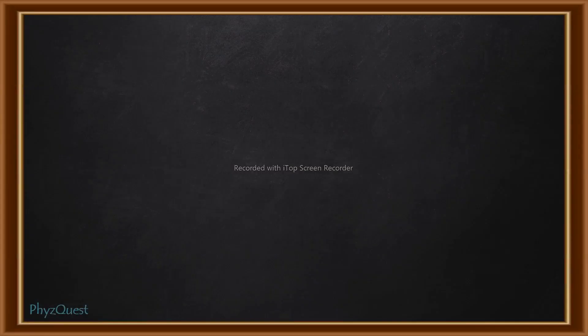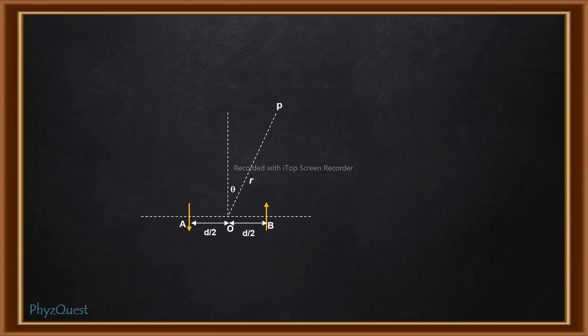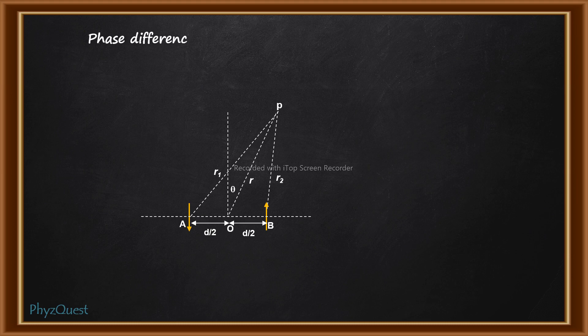Let us understand the diagram fully. As per the given diagram, the distance between point P and the center of the dipole O is r. Waves from points A and B are joining at P, and the path distances they cover are r1 and r2 respectively. We need to find the phase difference. As per the formula, phase difference between two waves equals (2π/λ) times the path difference.